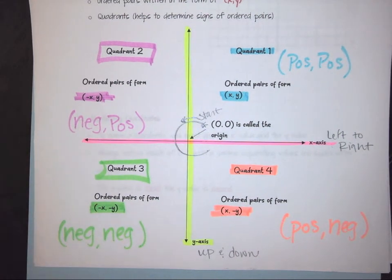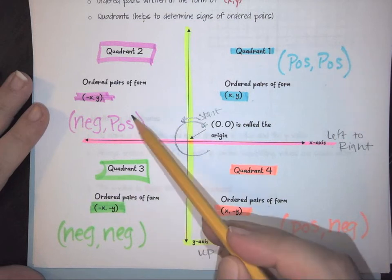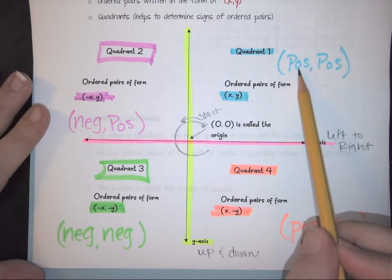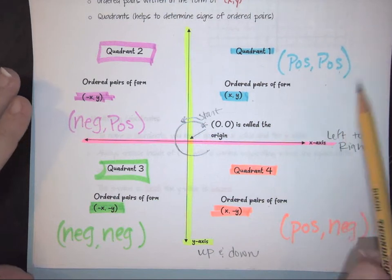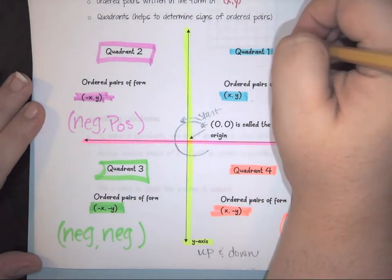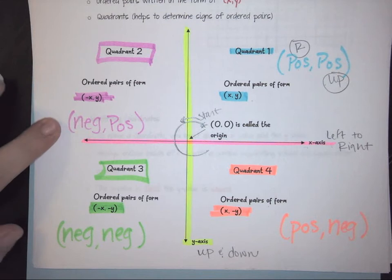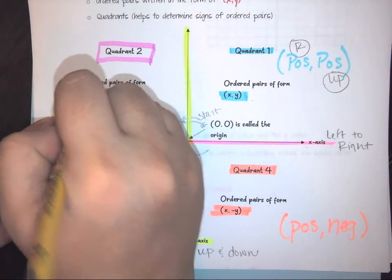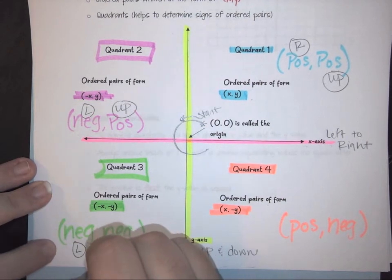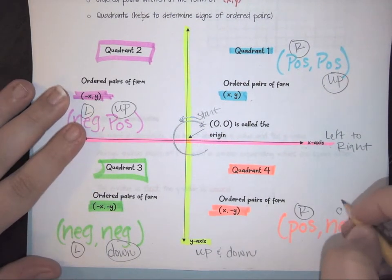Based on the coordinate points you have and the type of quadrant you're in, you can tell the direction you're moving. Positive-positive means moving to the right and moving up. Negative-positive means moving to the left and moving up. Negative-negative means going left and going down. And positive-negative means moving to the right and moving down.